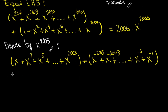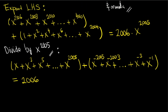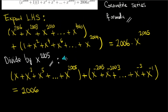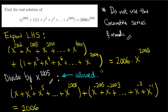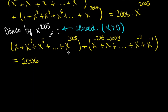We start to see a pattern here, and this equals 2006. Now I need to explain why dividing by x to the power of 2005 is allowed. From the equation itself, x to the power of 2006 plus 1 is always positive — 2006 is an even power — and the summation has all even powers, so it must be positive. Therefore the right-hand side must be positive too, so x cannot be zero, and we can conclude x must be positive. We are allowed to divide by x to the power of 2005.